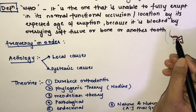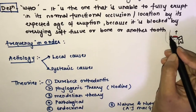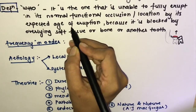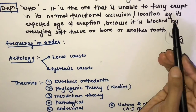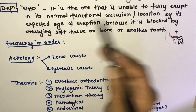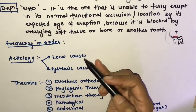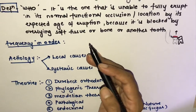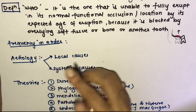For example, a third molar that is not able to fully erupt into its normal location or occlusion by its expected age — the expected age for the third molar is 17 to 25 — because it is blocked by overlying soft tissue, bone, or another tooth.